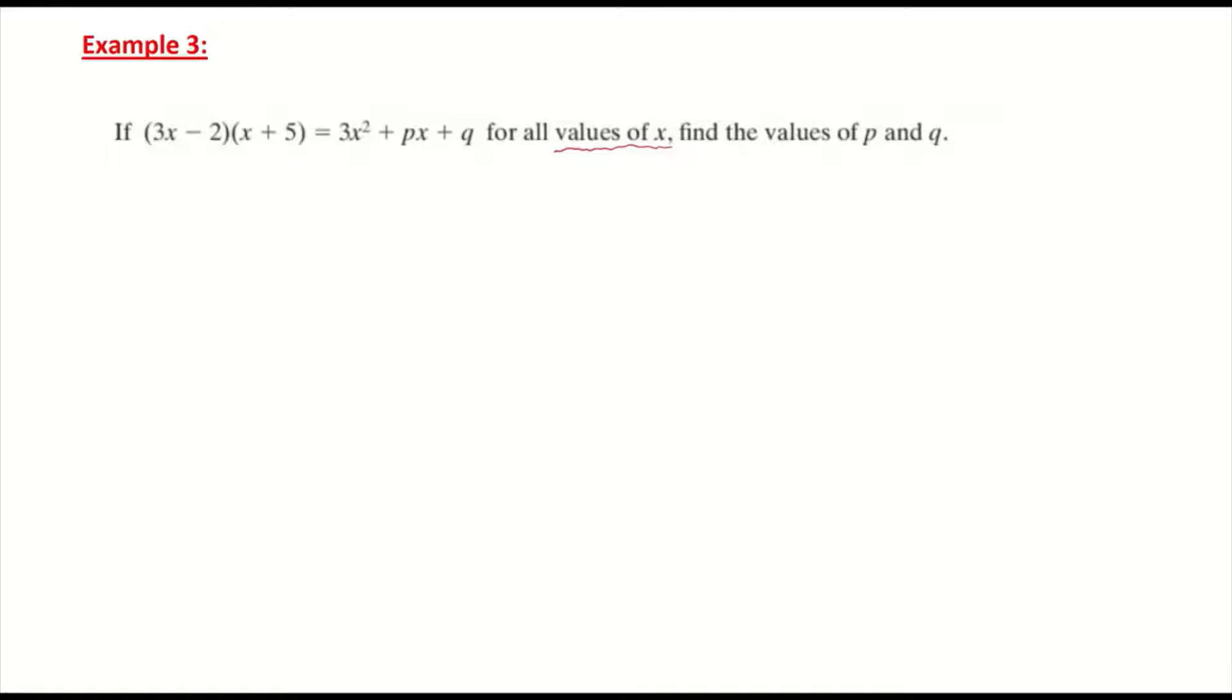When I multiply out my brackets, I'm going first term by second bracket, which is 3x times the second bracket (x + 5). Then my second term, which is -2, times my second bracket. And that is all equal to 3x² + px + q.